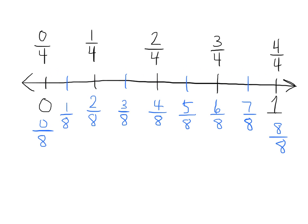And then down here, we took each quarter and cut it in half. So we made smaller intervals, and these are eighths. Once we took the quarters and cut them in half, we made them eighths.